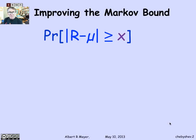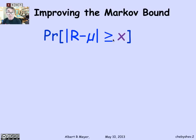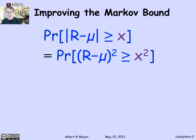We're interested in the probability that a random variable r differs from its mean by an amount x — that is, the absolute value of r minus mu is greater or equal to x. We're trying to get a grip on that probability as a function of x. The key point is that the event that the distance between r and its mean is greater or equal to x is equivalent to squaring both sides: the event that (r minus mu) squared is greater or equal to x squared. These two events are just different ways of saying the same thing, so their probabilities are equal trivially.